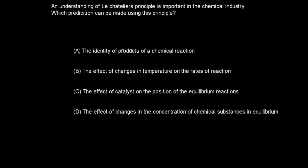Next question: an understanding of Le Chatelier's principle is important in the chemical industry. Which prediction can be made using this principle? A, the identity of the products of a chemical reaction. B, the effects of change in temperature on the rates of reaction. C, the effect of catalysts on the position of the equilibrium. D, the effects of changes in the concentration of chemical substances in equilibrium.